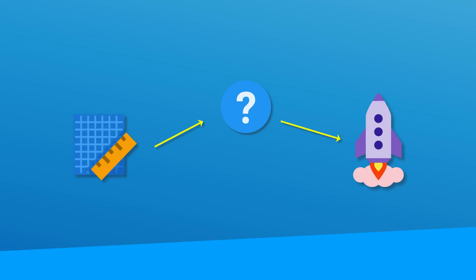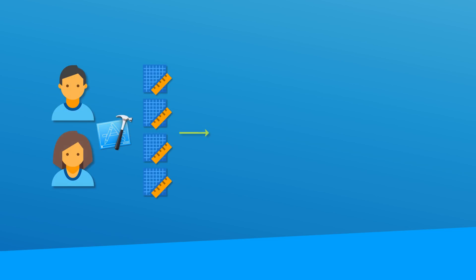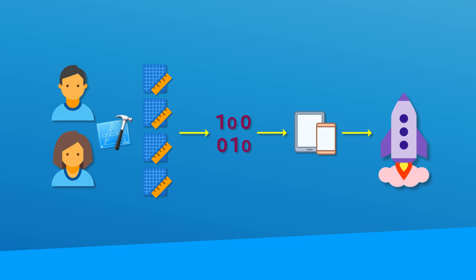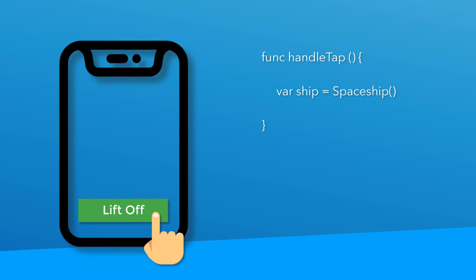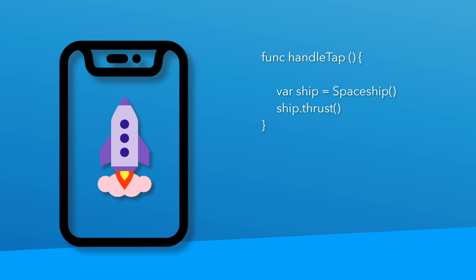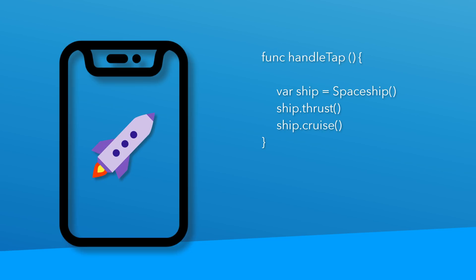So who is the person that takes that class and turns it into an object? That's the device in your hand — a mini computer. You write your instructions in Xcode, Xcode turns it into a format your device can understand, and your device carries out those instructions. You need to write instructions to tell the computer to take your classes and turn them into objects, and to tell it how you want to use those objects. For example: when the user taps the lift-off button, create an object from the spaceship class, then call the thrust function, then call the cruise function.